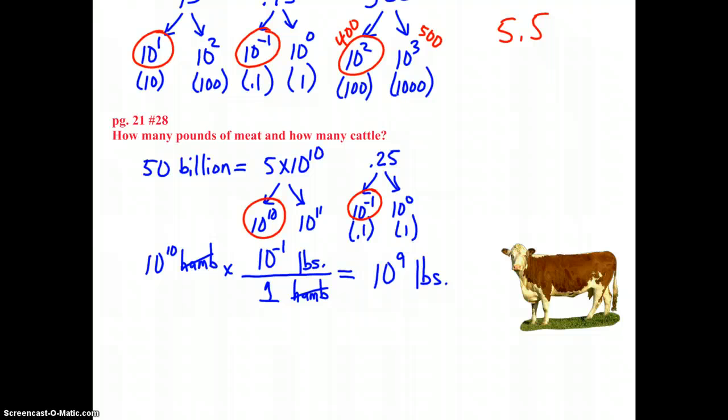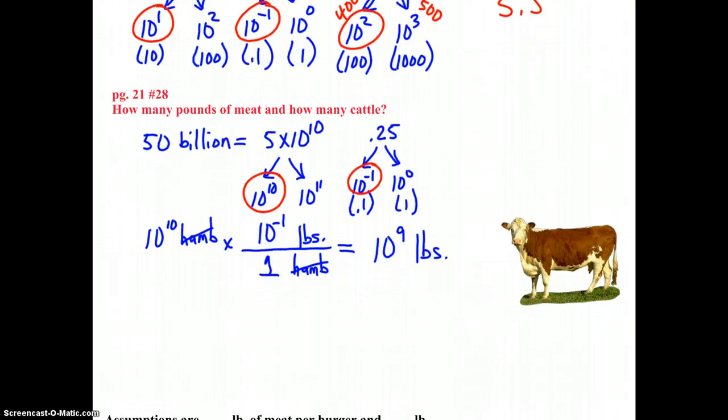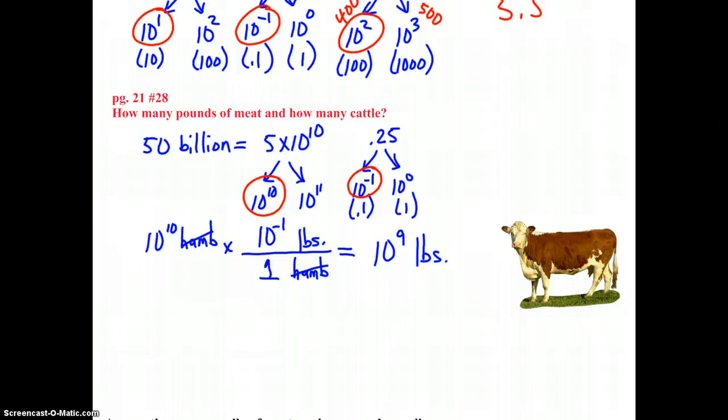Now, our last step here is how many cattle, how many heads of cattle were used to furnish the meat. So we now have to convert 10 to the 9th pounds to cattle or cows. So pounds would go in the denominator in order to cancel pounds. And one member of a head of cattle would be a cow. One cow would be able to furnish how many pounds. The nice part about this is there would be some of you who would have no idea. But if you implore some common sense, and keep in mind, you're only doing this using powers of 10.